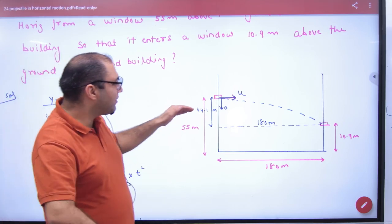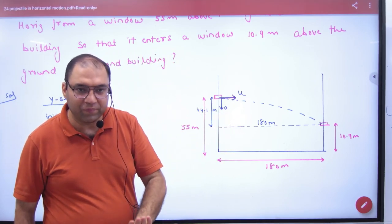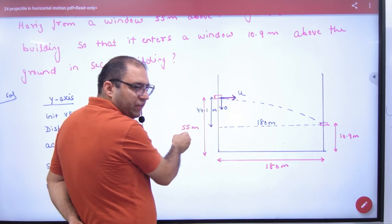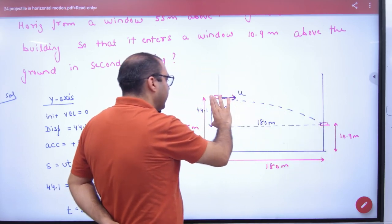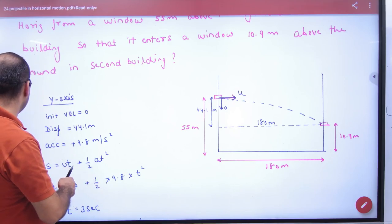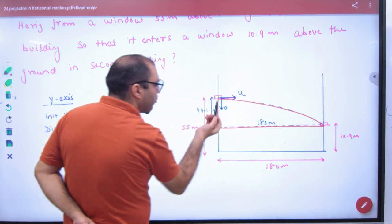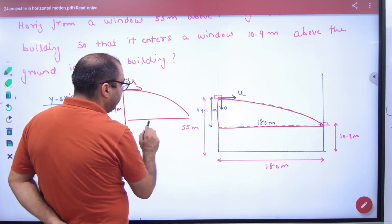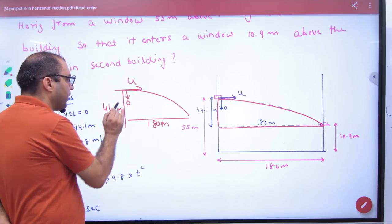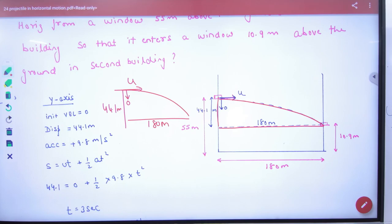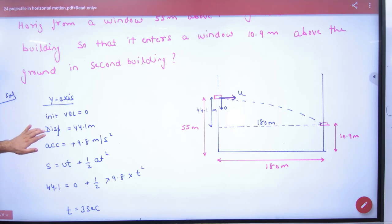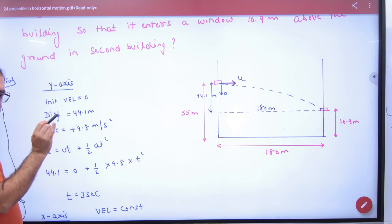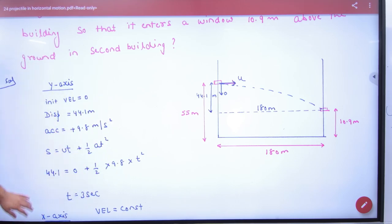The horizontal distance is 180 m and the initial vertical velocity is 0. The vertical drop = 55 - 10.9 = 44.1 meters. Using the y-axis: s = ut + ½at². So 44.1 = ½ × 9.8 × t². Solving: t = 3 seconds. Time was not the final answer but is needed as an intermediate step.